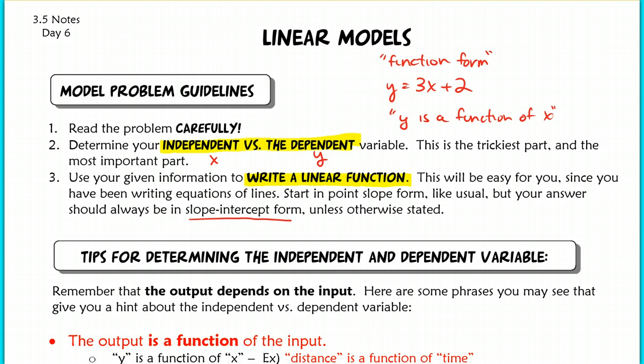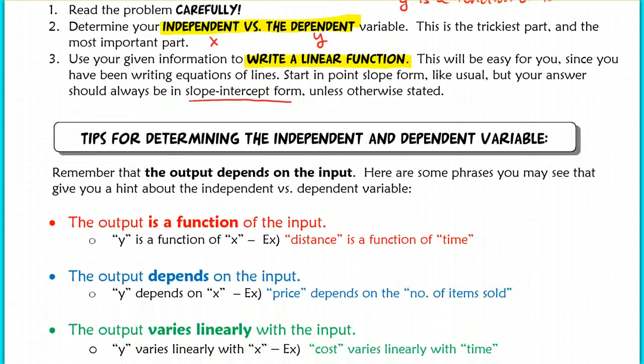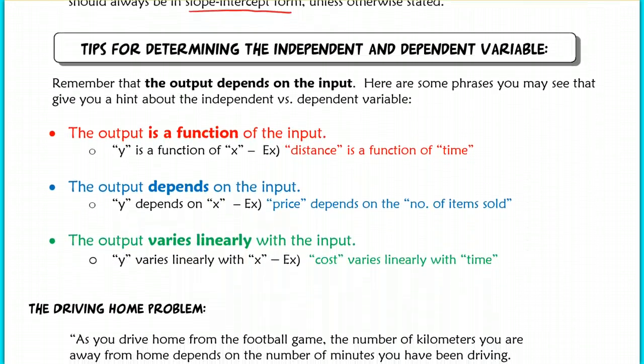Now, that kind of brings me to our next tip here on how to determine the independent and dependent variable. So, I was just saying y is a function of x, right? And we know that y is our dependent, x is our independent. So, you might see this phrase explicitly written in a question. They might tell you something like, for example, distance is a function of time. Right away, you have to, as the reader, realize that distance is your output, your dependent variable, and time is your input or your independent variable.